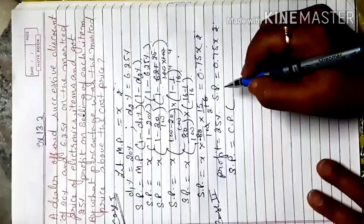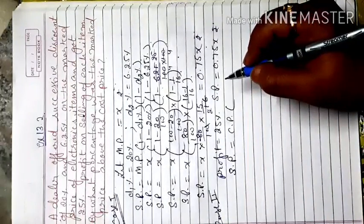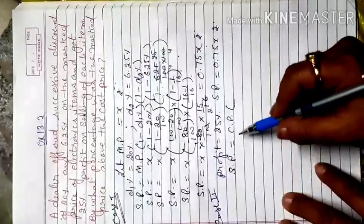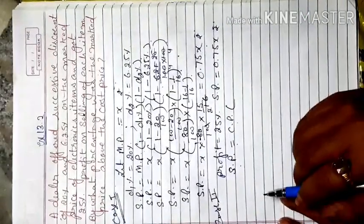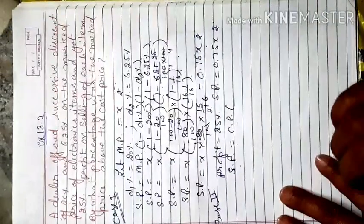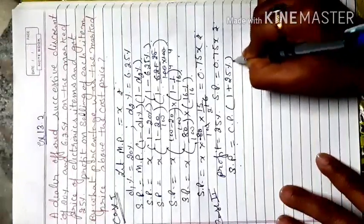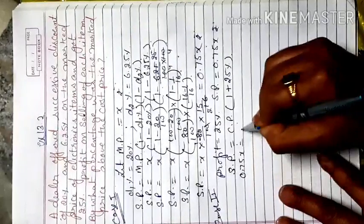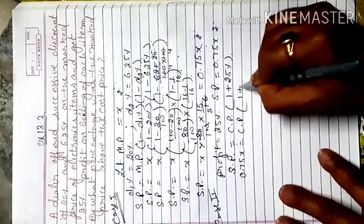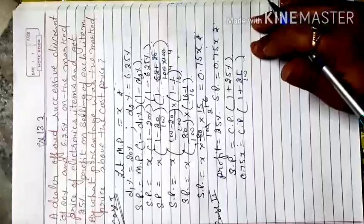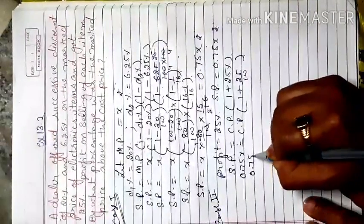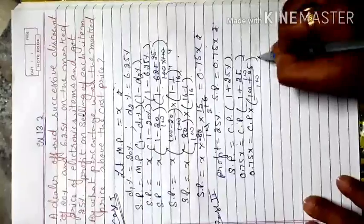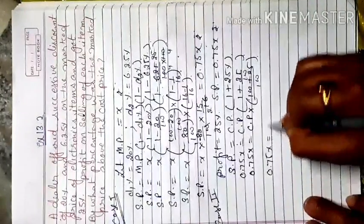Applying values: 0.75x = CP × (1 + 25/100) = CP × (125/100). So 0.75x = CP × (125/100). Cross-multiplying: CP = 0.75x × (100/125). Removing the decimal: CP = (75/100) × (100/125) × x = (75/125)x = (3/5)x = 0.60x rupees.